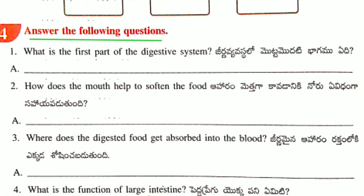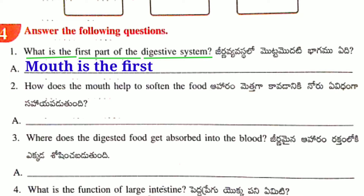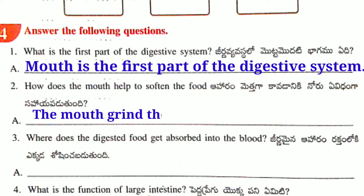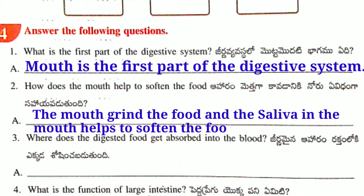Fourth activity — answer the following questions. First question: What is the first part of the digestive system? Second question: How does the mouth help to soften the food? The mouth grinds the food and the saliva in the mouth helps to soften the food.